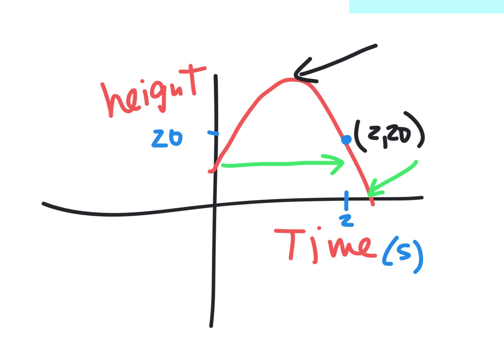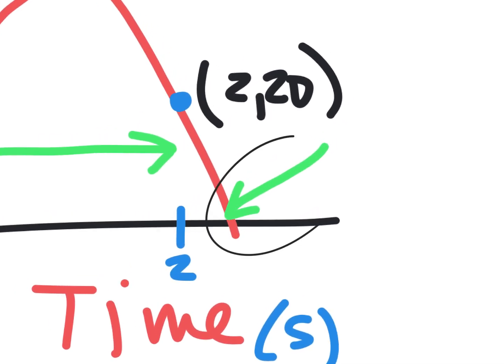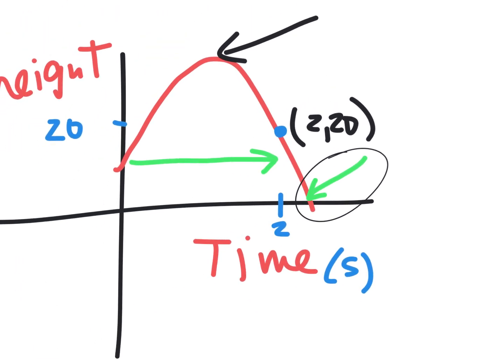What about this spot with the green arrow? That's when the ball hits the ground. At that exact second the ball reaches a height of zero, which means it's hitting the ground.